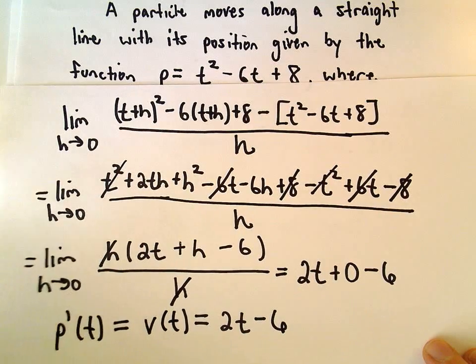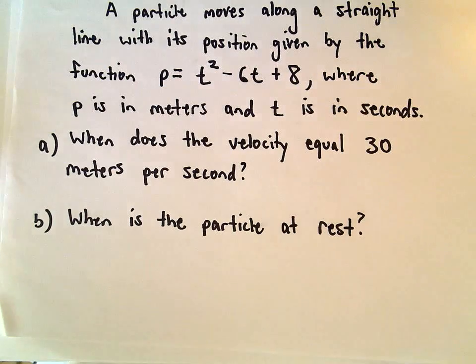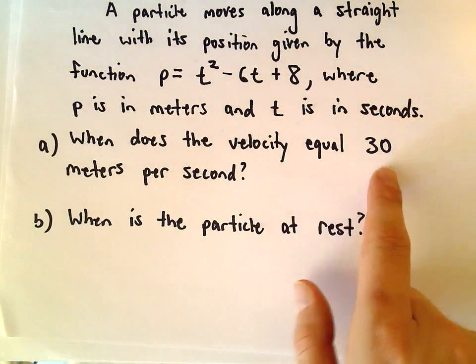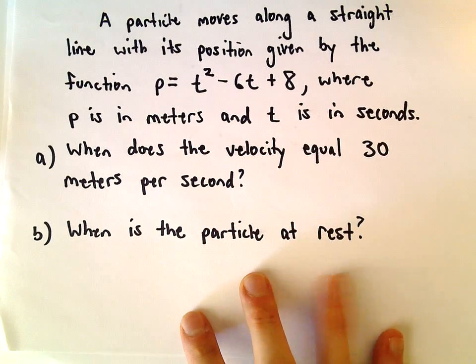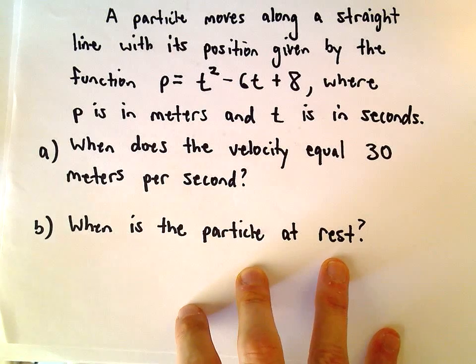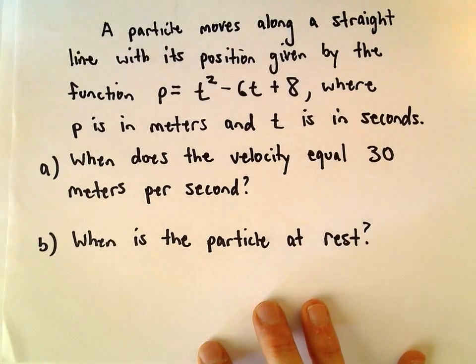All right, so let's go back and see what they actually wanted us to do. We want to figure out when the velocity equals 30 meters per second, and when the velocity is 0. If the velocity is 0, that's when the particle would be at rest.